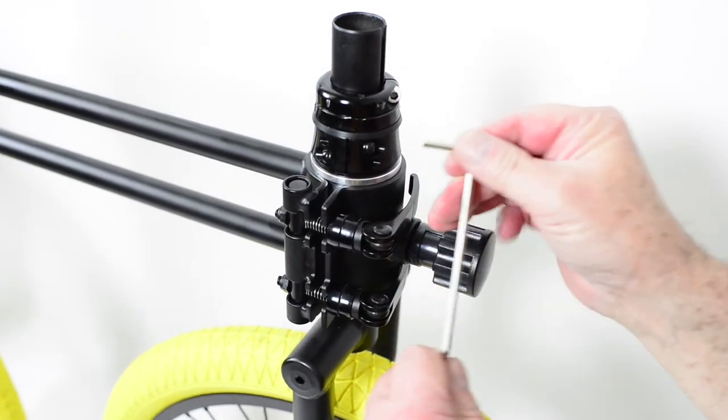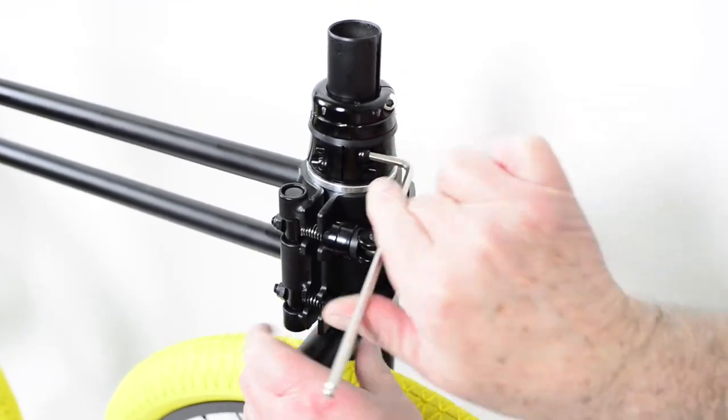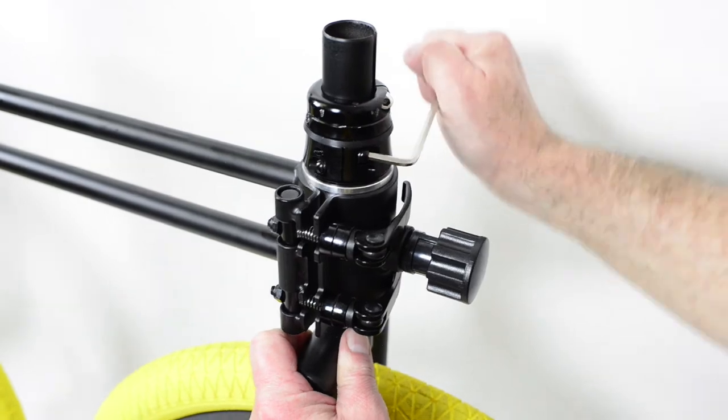Then take the hex key and tighten the clamping mechanism of the headset back again. First one screw and then the other.